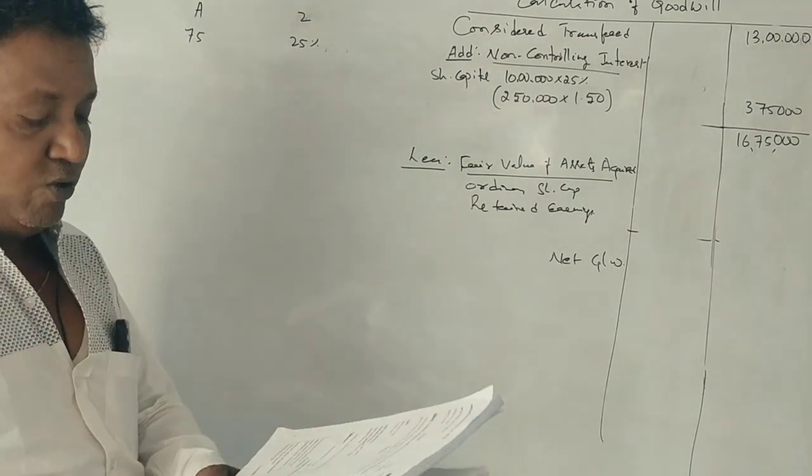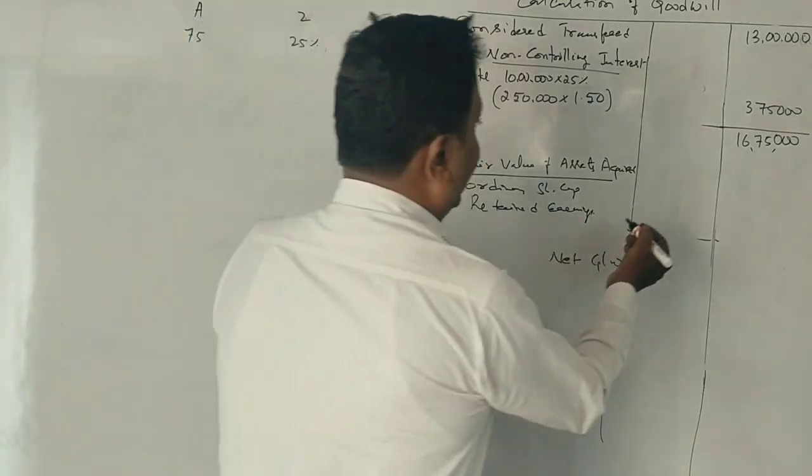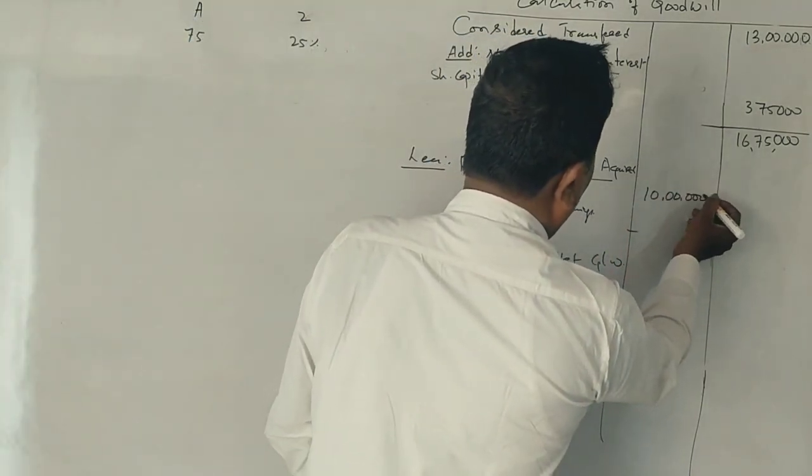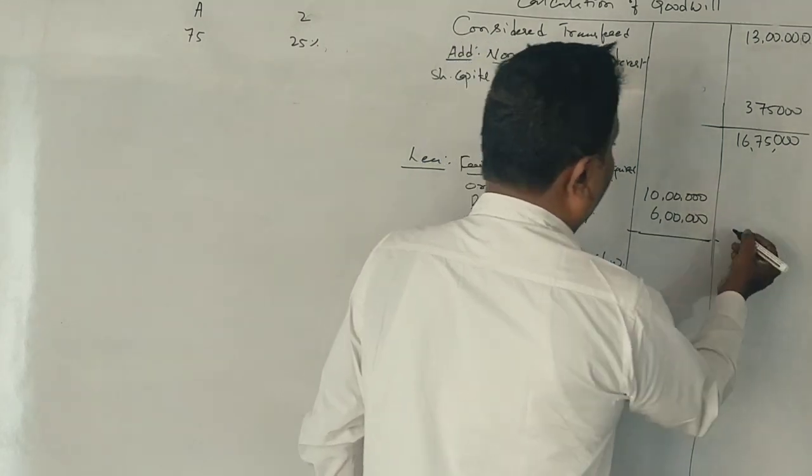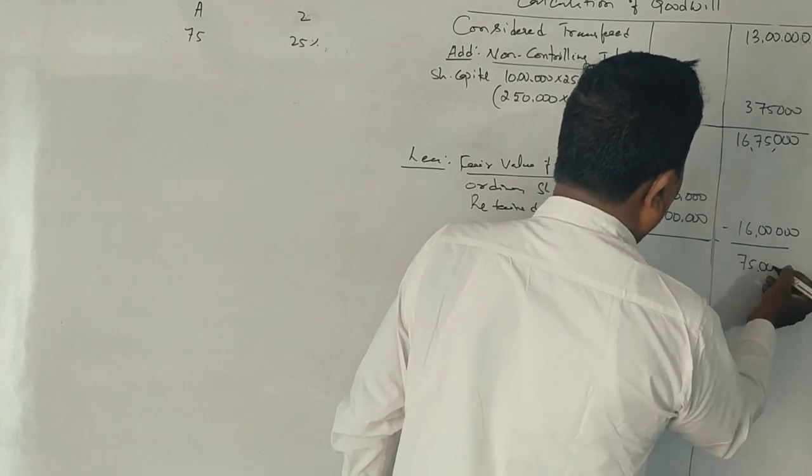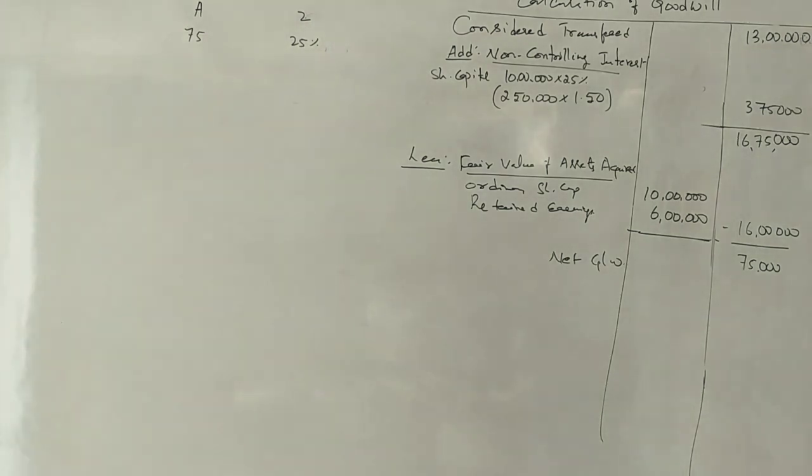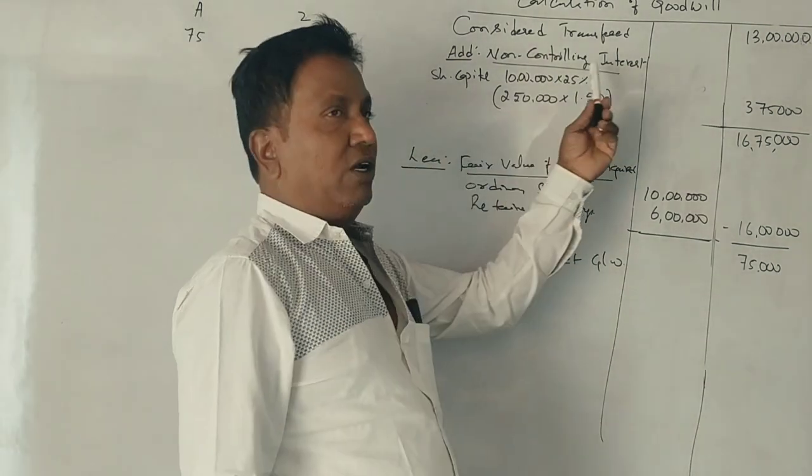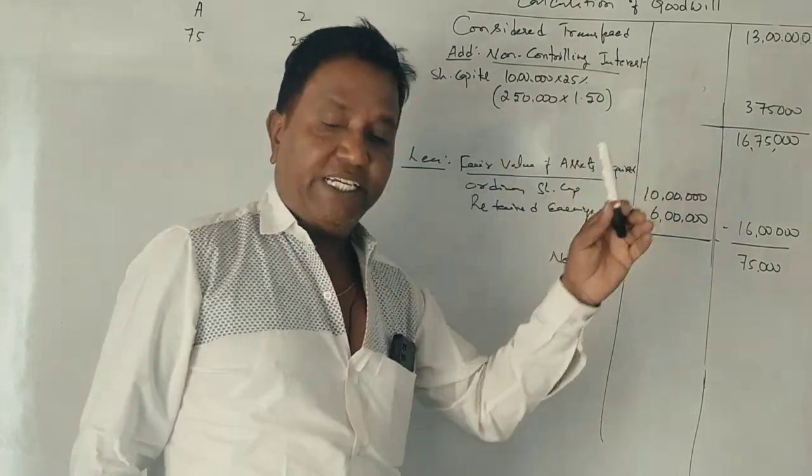Fair value of the assets minus fair value of the share capital 10 lakhs, retained earnings 6 lakh rupees, total 16 lakh rupees. So the difference is 75,000 rupees. Now non-controlling interest calculation with retained earnings 6 lakhs.